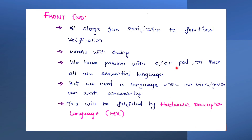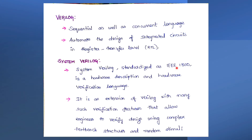Verilog is both a sequential and concurrent language. It is mainly used to design integrated circuits at the register transfer level. We use Verilog to code and design our chip or circuit, and we can also verify or test using Verilog code, but it is not that accurate or efficient for complex verification tasks.